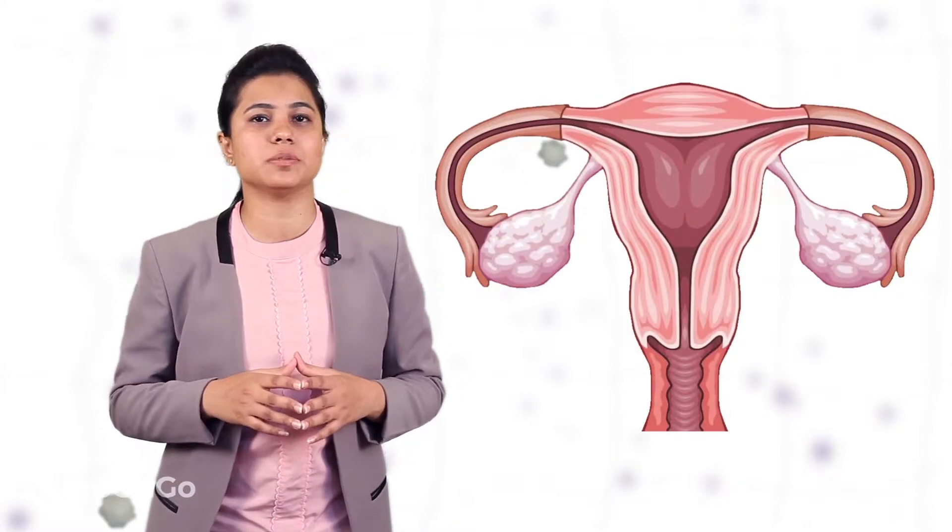Hello everyone. In the last video, we have seen the process of reproduction and we know how fertilization takes place to form a zygote and how a zygote develops into an embryo which ultimately develops into a child. We have also seen the organs of the female reproductive system.